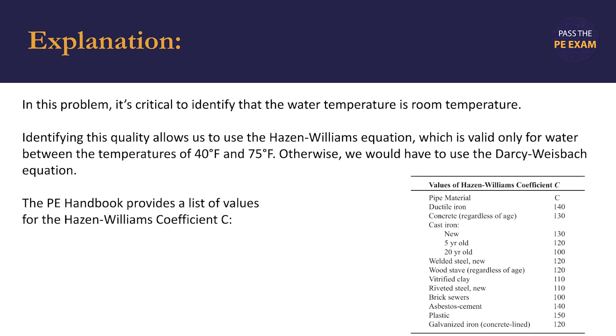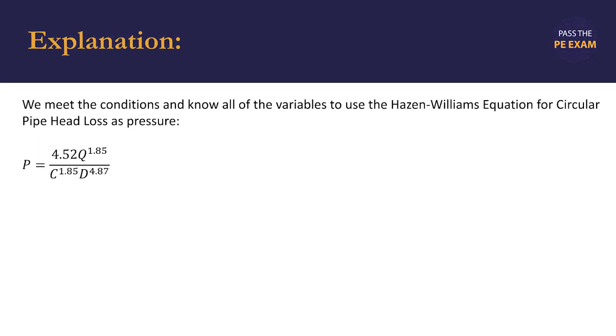So the PE handbook provides a list of values for the Hazen Williams coefficient c. We're told that the material is 20-year-old cast iron, and we can see that on this table it's listed and the value of the coefficient is 100. Since we're using the circular pipe head loss equation, let's substitute in our values.